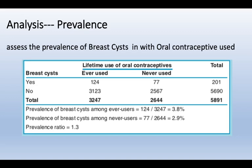To analyse data, the first and prime objective is frequency estimation — or the prevalence estimate. For example, the prevalence of breast cysts and oral contraceptive use: breast cysts are observed in women and compared with the exposure of interest, which is oral contraceptive use. A total of 201 breast cysts were reported out of 5,891 women. Dividing 201 by 5,891 gives a prevalence of 3.4%. This is the prevalence of breast cysts in a German population.